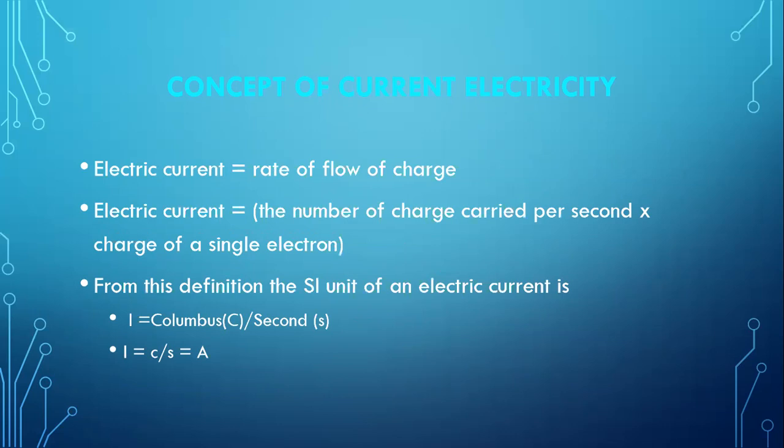That is, I equals coulombs per second, abbreviated as I = C/s, which equals A, the ampere.